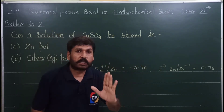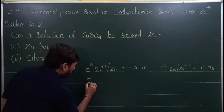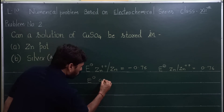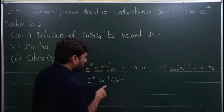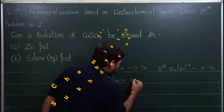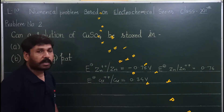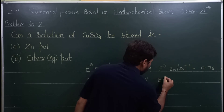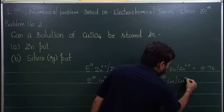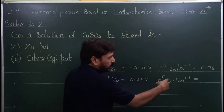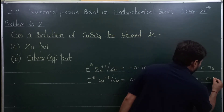मैं दोनों के द्वारा समझा रहा हूँ कि हमें किसमें किसकी जरूरत पड़ेगी। अब copper की बात करते हैं — E0 Cu2+ / Cu, यानि standard reduction potential of copper होता है 0.34 volt। अगर इसे oxidation potential के रूप में लिखें तो Cu → Cu2+, और oxidation potential minus 0.34 हो जाएगा।